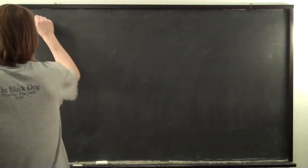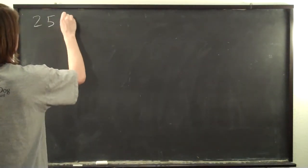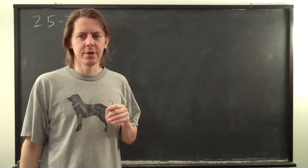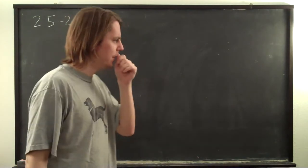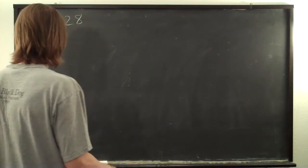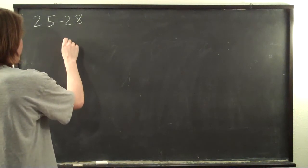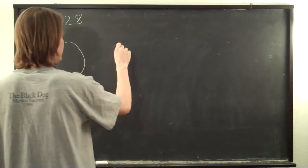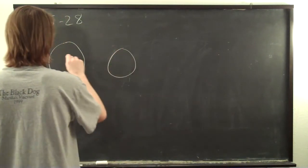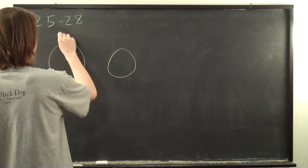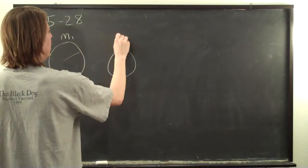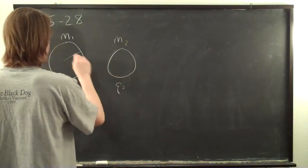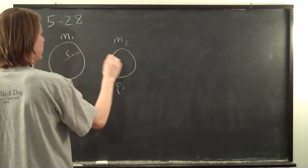This is problem 2528 from the Suggested Problems. This one is a lot harder than it looks like when I first looked at it. It sounds not so bad. They say you have two spheres, two insulating spheres with different masses, M1 and M2, and different amounts of charges evenly distributed on their surface and different radii, R1 and R2.